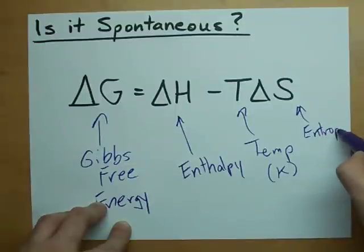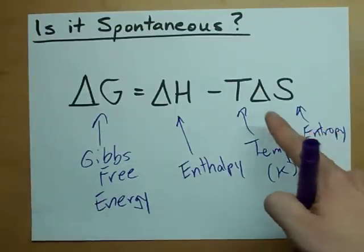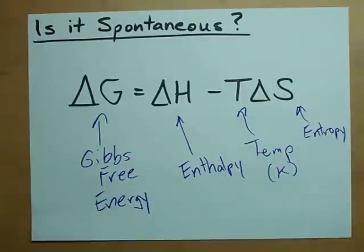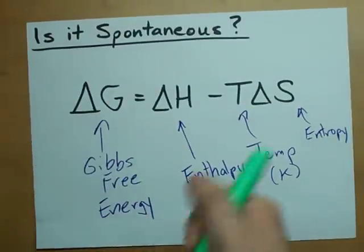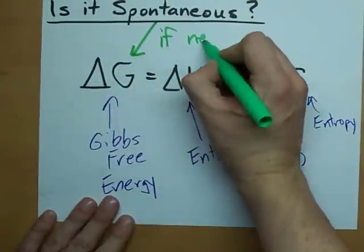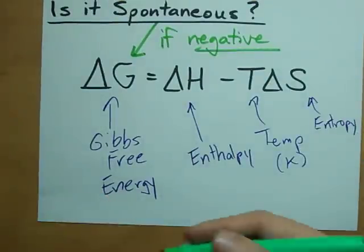Now, entropy is a measure of disorder, and usually they'll just give you what the change in entropy, or delta S, is. Here's the deal: if this is negative, it's spontaneous. Spontaneous if delta G is negative. That's all you need to do.